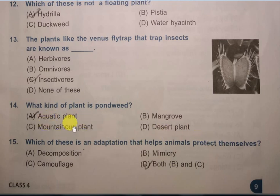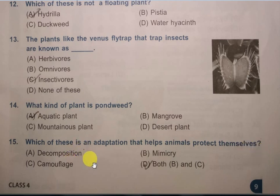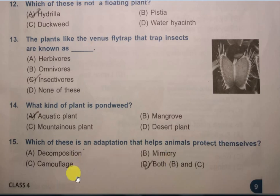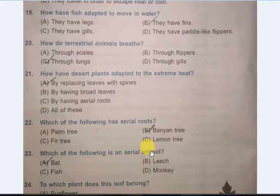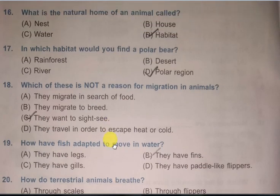Question 14: What kind of plant is pondweed? Options are: aquatic plant, mangrove, mountainous plant, desert plant. The correct answer is aquatic plant. Question 15: Which of these is an adaptation that helps animals protect themselves? Options are: decomposition, mimicry, camouflage, both B and C. The correct answer is both mimicry and camouflage.